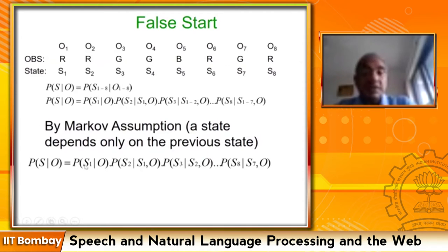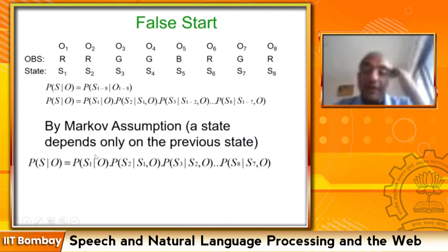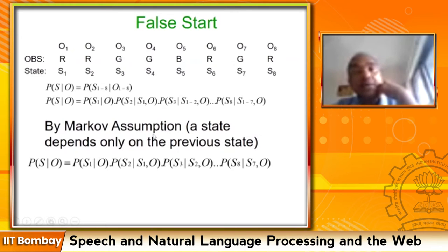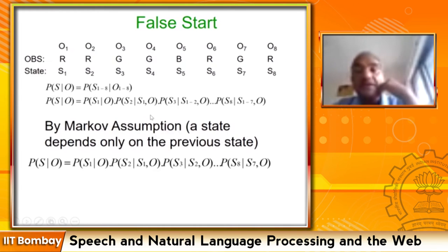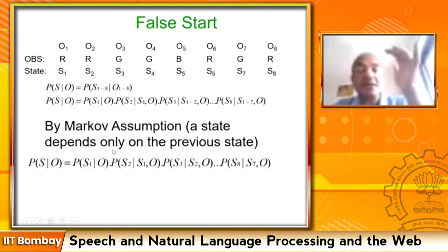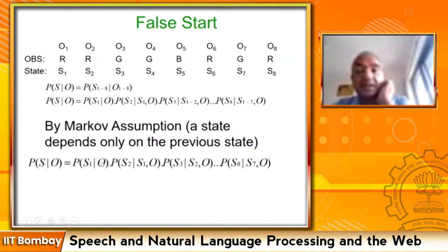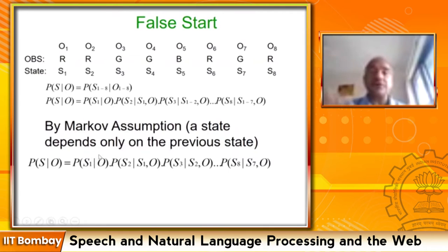If we do so, we are dealing with probability values P(si|oi). But no such probability is given to us in our HMM formulation — we are given only transition probability and observation probability, and the observation probability is given in the opposite direction: P(observation|state), not the other way. So this is a false start because we do not have the machinery to deal with this formulation.